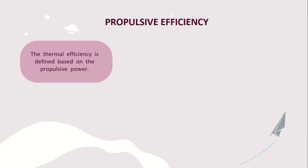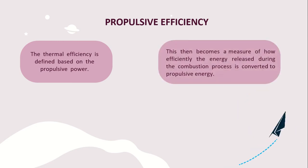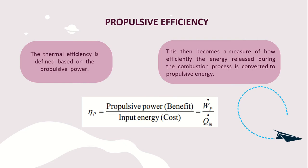Propulsive efficiency. The thermal efficiency is defined based on the propulsive power — to get the efficiency of a turbojet engine, we first have to find the propulsive power. This becomes a measure of how efficiently the energy released during the combustion process is converted to propulsive energy. The formula for propulsive efficiency is the propulsive power — the benefit — over the input energy.